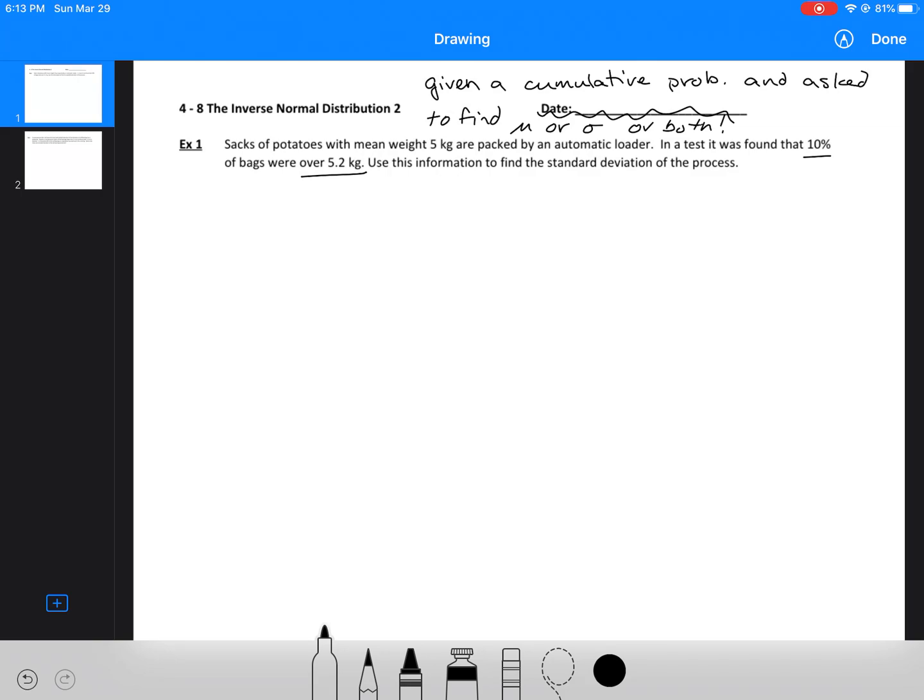Here we're going to need to apply our knowledge of standardizing because we are missing some of the information about the normal distribution. So let's define our variable. We'll let M represent the mass of potatoes in a sack. We'll write our normal distribution as N(5, σ²). We don't know what our standard deviation is. The other thing that we know is that the probability that the mass is greater than 5.2 is 10%, so P(M > 5.2) = 0.10.